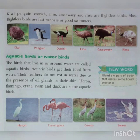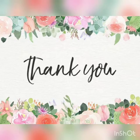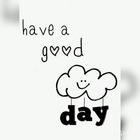Heron, flamingo and crane are examples of aquatic birds. So students, this is the first half of our chapter that we read in today's class. The next part of the chapter we will read in tomorrow's class. Thank you and have a good day.